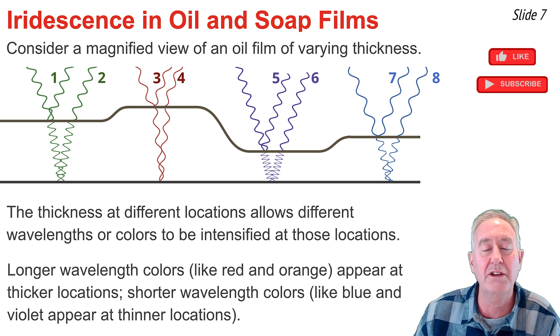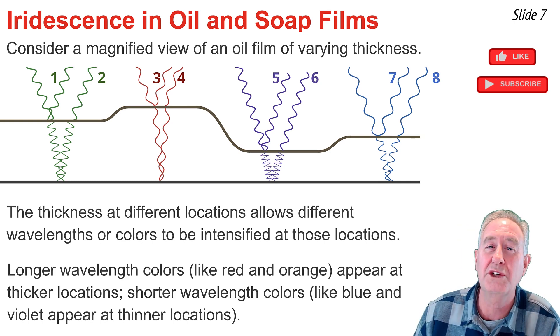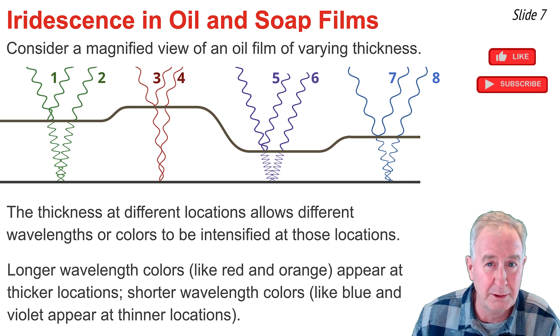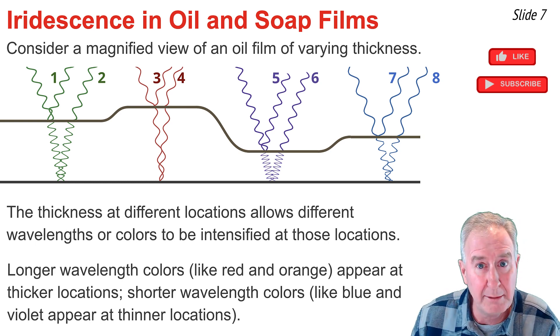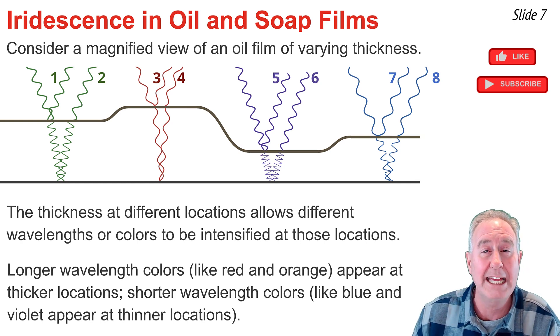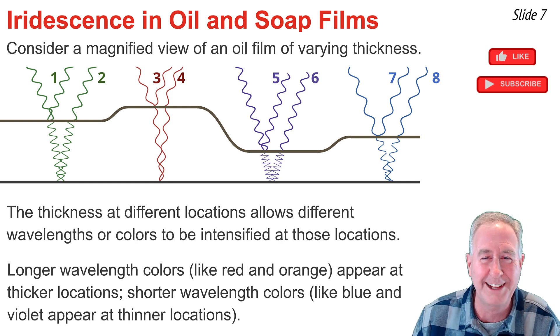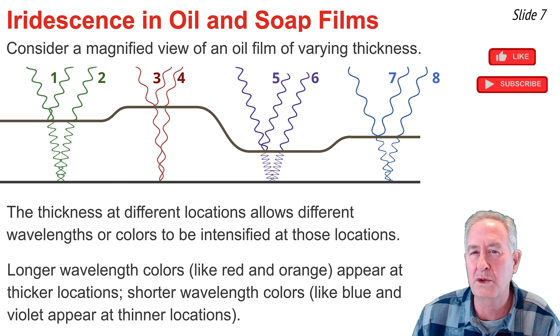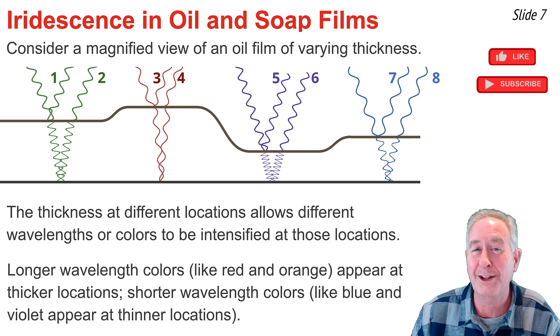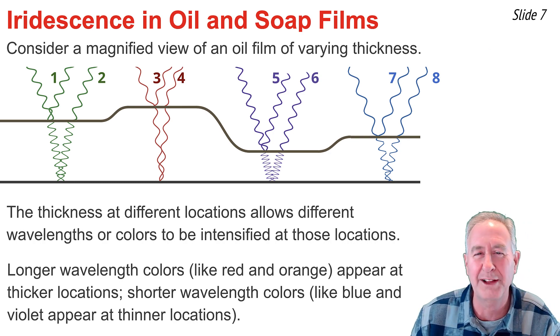But at the thinner locations like those for waves five and six, we would see the violets being reinforced and those colors would be appearing at that specific location. And for the intermediate locations between where the reds and the violets are being reinforced, we would see Roy G. Biff being reinforced. So we see for waves one and two and seven and eight, we see greens and blues being reinforced at those specific colors. It's all thickness dependent and wavelength dependent. And so while Roy G. Biff strikes the surface at given thicknesses and therefore given locations, a specific wavelength and color is seen at that specific location.